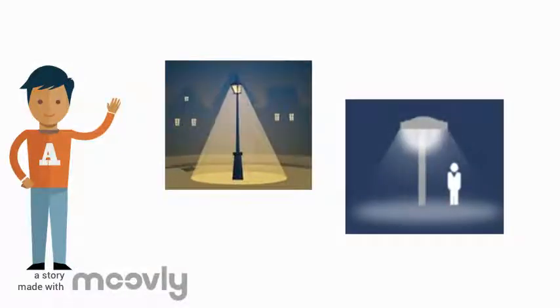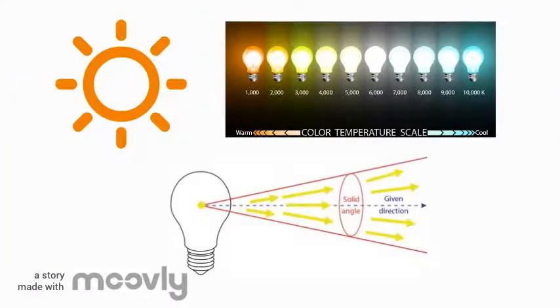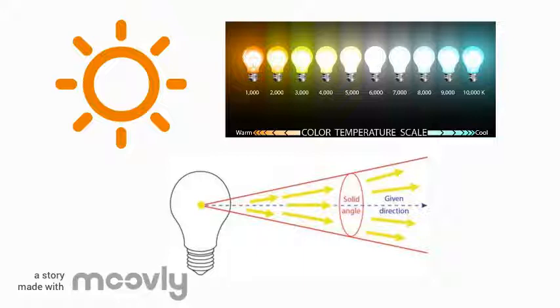Light fixtures that point downwards and are fully shielded will reduce light pollution significantly. Decreasing the brightness, colour, and intensity of the bulb will also reduce the effects of glare and light trespass.